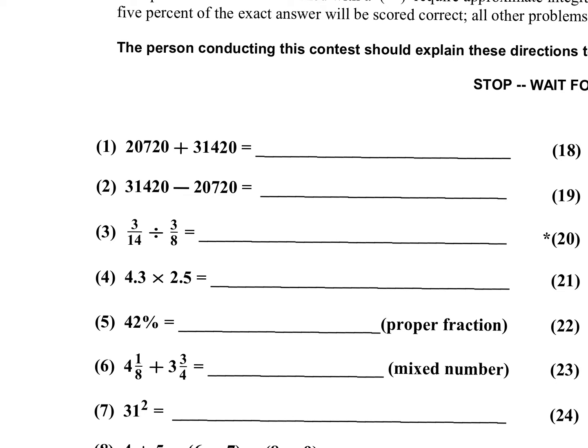Problem number one is an addition problem. So I'm gonna add 20 plus 20 that's 40 and then I'm gonna add 7 plus 4 is 11 carry a 1. So I'm gonna have 21 plus 31 that's 52.